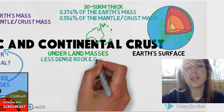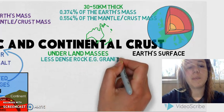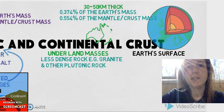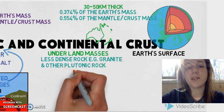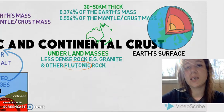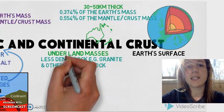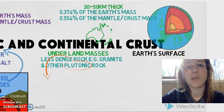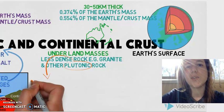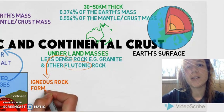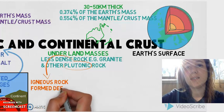Continental crust is made up of less dense rock than the oceanic crust — things like granite and other plutonic rock. The word plutonic just means it's an igneous rock that has been formed deep under the Earth's surface, and these usually have a really coarse grain size. Other examples are schist and gneiss.